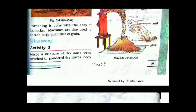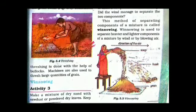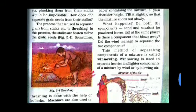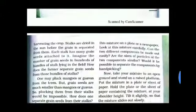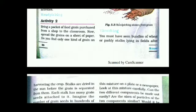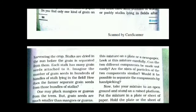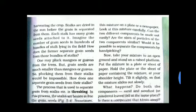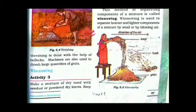In the last classes we learned about the different methods of separation of materials. We learned the first method, hand picking, and then we learned the method of threshing, which is used by farmers. In today's class we are going to learn another method used by farmers to separate impurities from rice grains — that is winnowing.